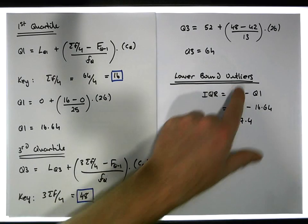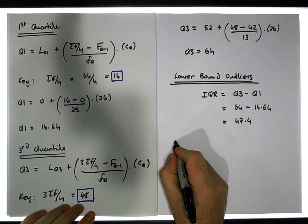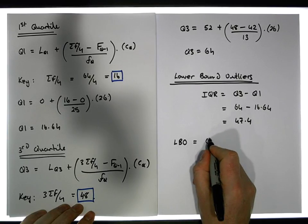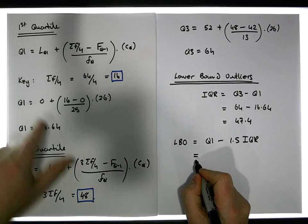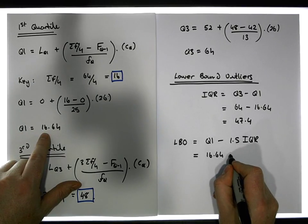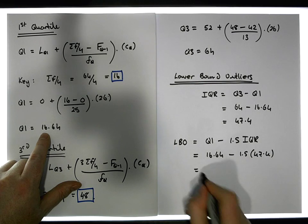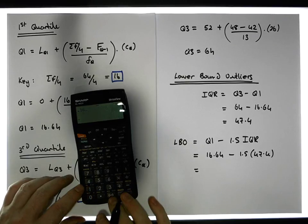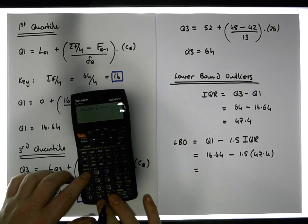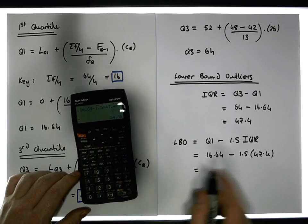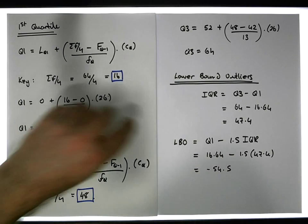Observations are classified as lower bound outliers if they are less than Q1 minus 1.5 times the interquartile range. So that's 16.64 minus 1.5 times 47.4, which gives us a value of approximately minus 54.5.